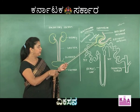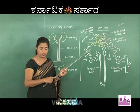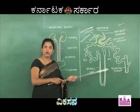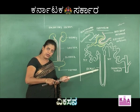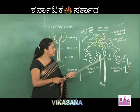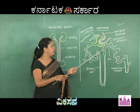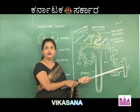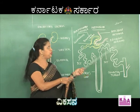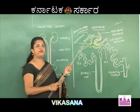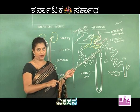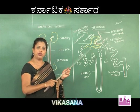Bowman's capsule continues into coiled tubules. The first is the proximal convoluted tubule, connected to a thinner tubule called Henle's loop. Henle's loop has a descending limb and an ascending limb. This connects to the distal convoluted tubule, which then joins the collecting tubule. The collecting tubule receives connections from many such nephrons. This structure is important because nephron diagrams are frequently given in exams with labelling questions.